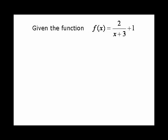Start off with this function f(x) equals 2 over x plus 3 plus 1. This is a more complicated one because it's a reciprocal function that has been translated three units to the left and one unit up, and we also have a 2 on top.